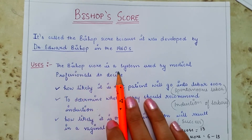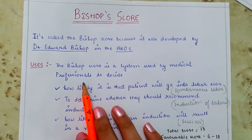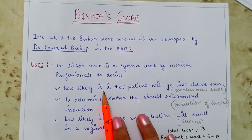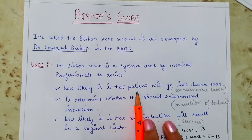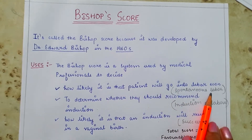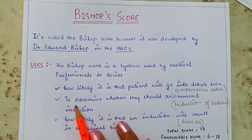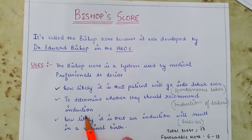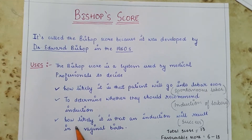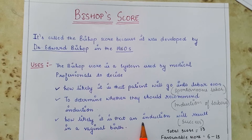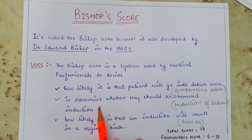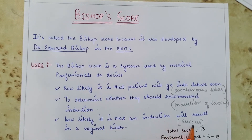Bishop's Score is a system used by medical professionals to decide: first, how likely it is that a patient will go into spontaneous labor soon; second, whether to recommend induction of labor; and third, how likely it is that an induction will result in a successful vaginal birth.